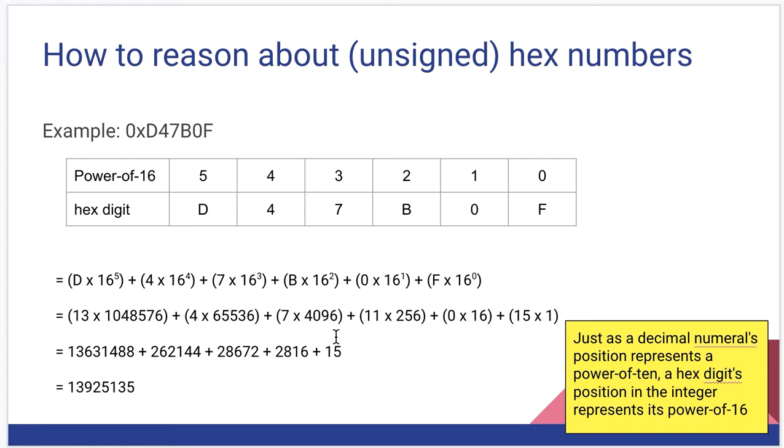How do we reason about unsigned hex numbers? Exactly the way we do about decimal and binary numbers, except now we're dealing in powers of 16. With decimal numbers, the base 10 system, we were dealing in powers of 10. With binary, the base 2 system, we were dealing in powers of 2. Hexadecimal, the base 16 system, we're dealing in powers of 16. So, here I have a number, D47B0F. F times 16 to the 0th power, 0 times 16 to the 1st power, B times 16 to the 2nd power, 7 times 16 to the 3rd power, 4 times 16 to the 4th power, D times 16 to the 5th power.